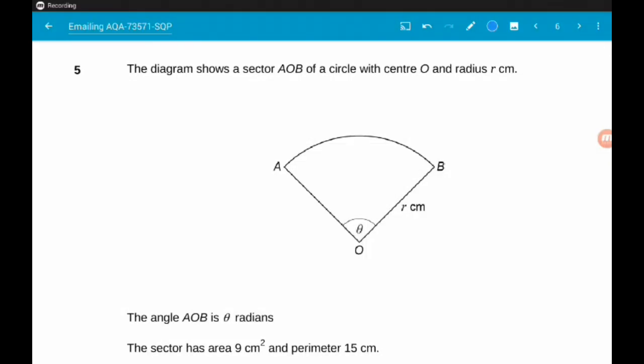Okay, question 5. So we have a sector AOB of a circle, center O, and radius R centimeters.